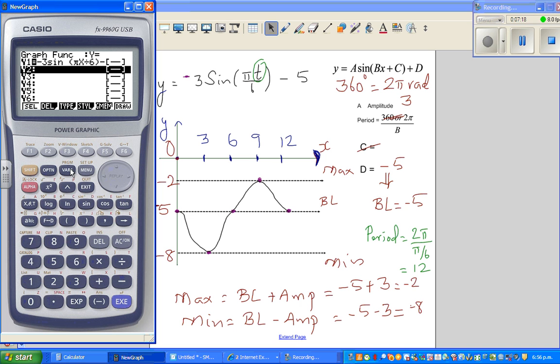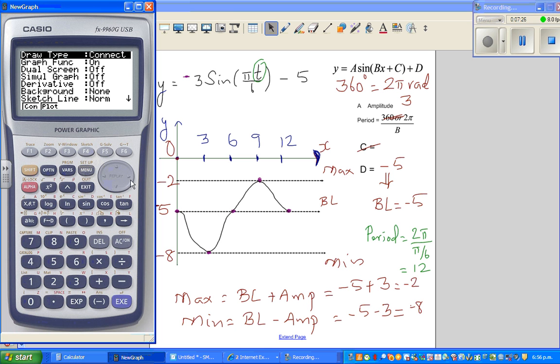Before I graph it, I have to check whether it's in radians. It's already in radians, but it's always good. So shift setup, go to setup and check, because you're working in radians. Your calculator has to be set on radians. That's the first check you need to do.